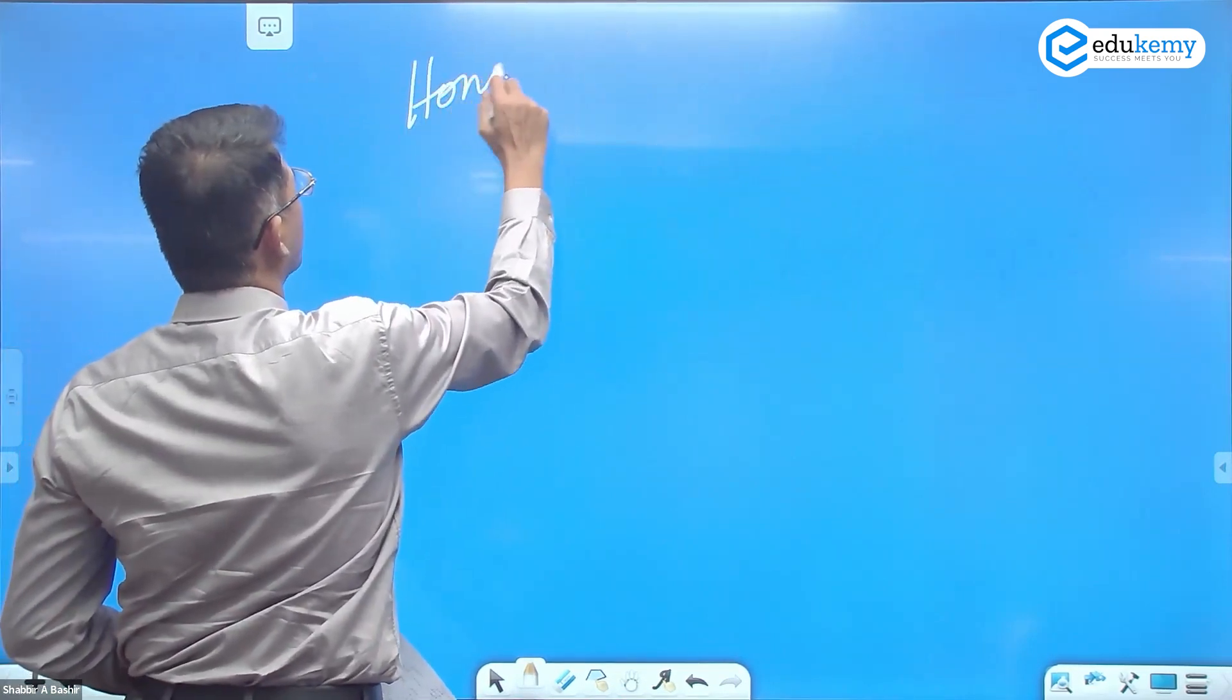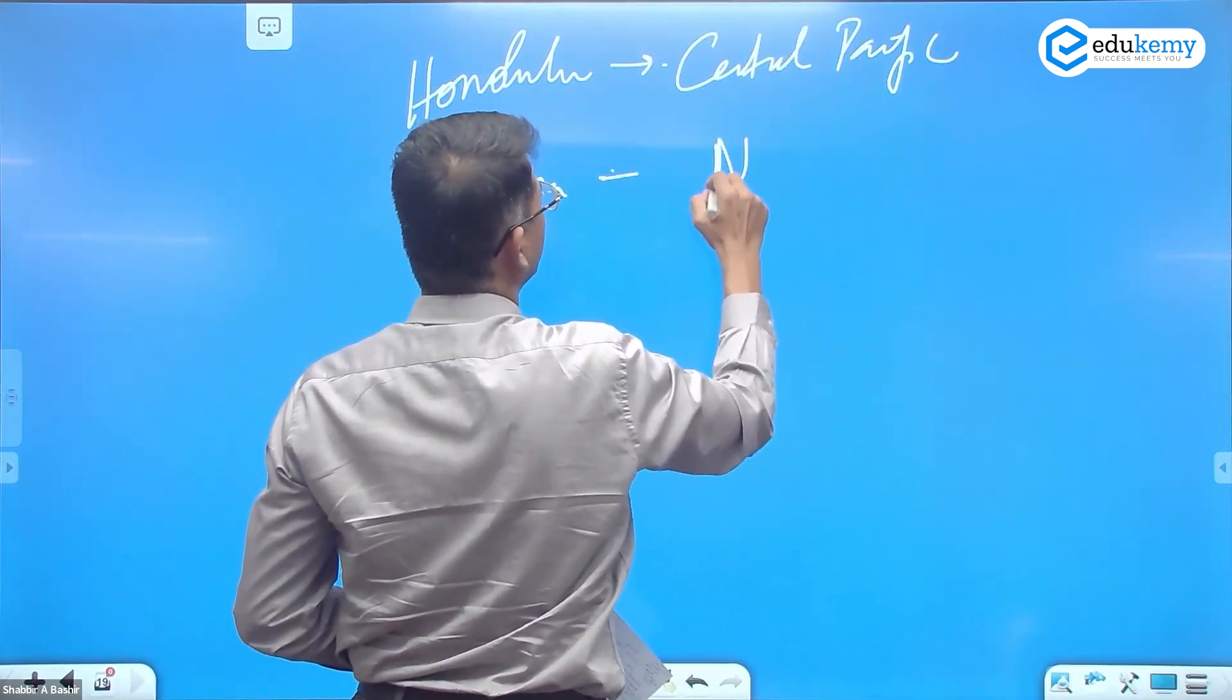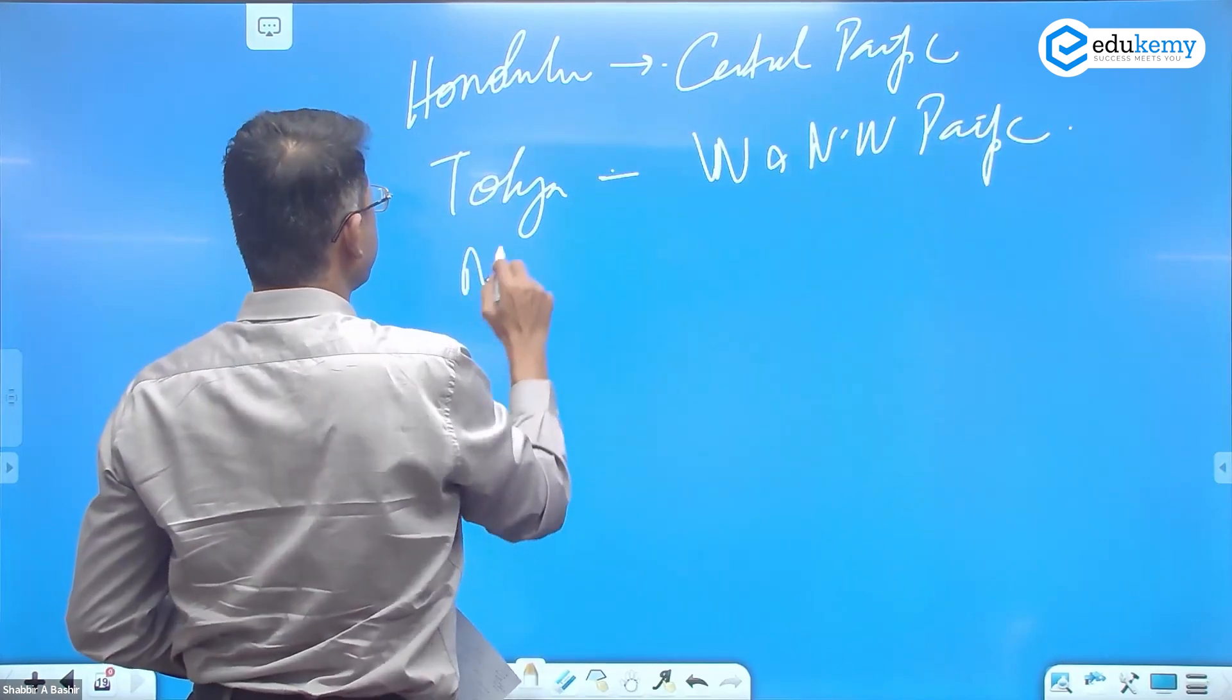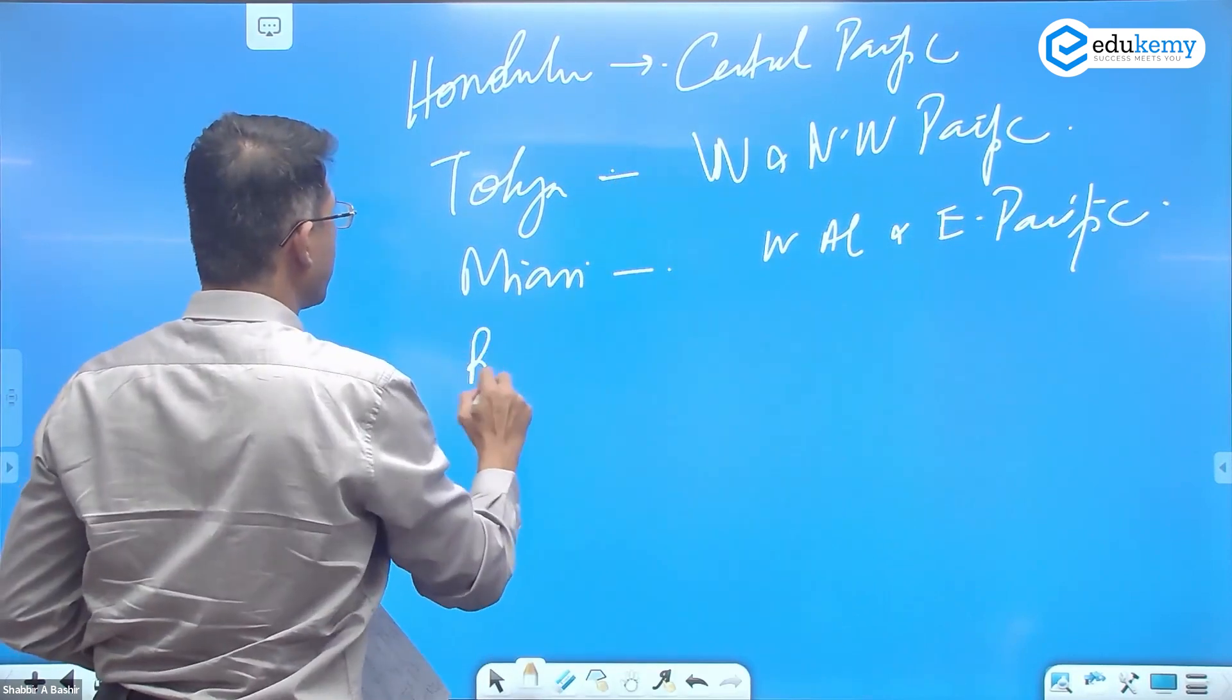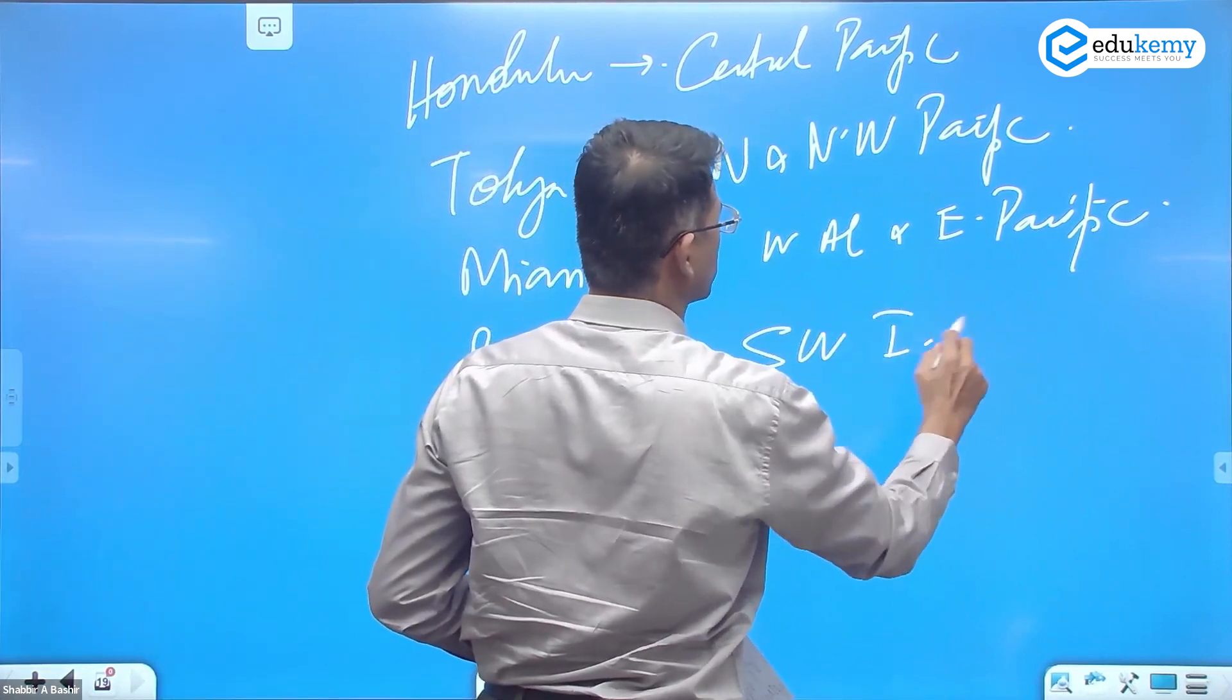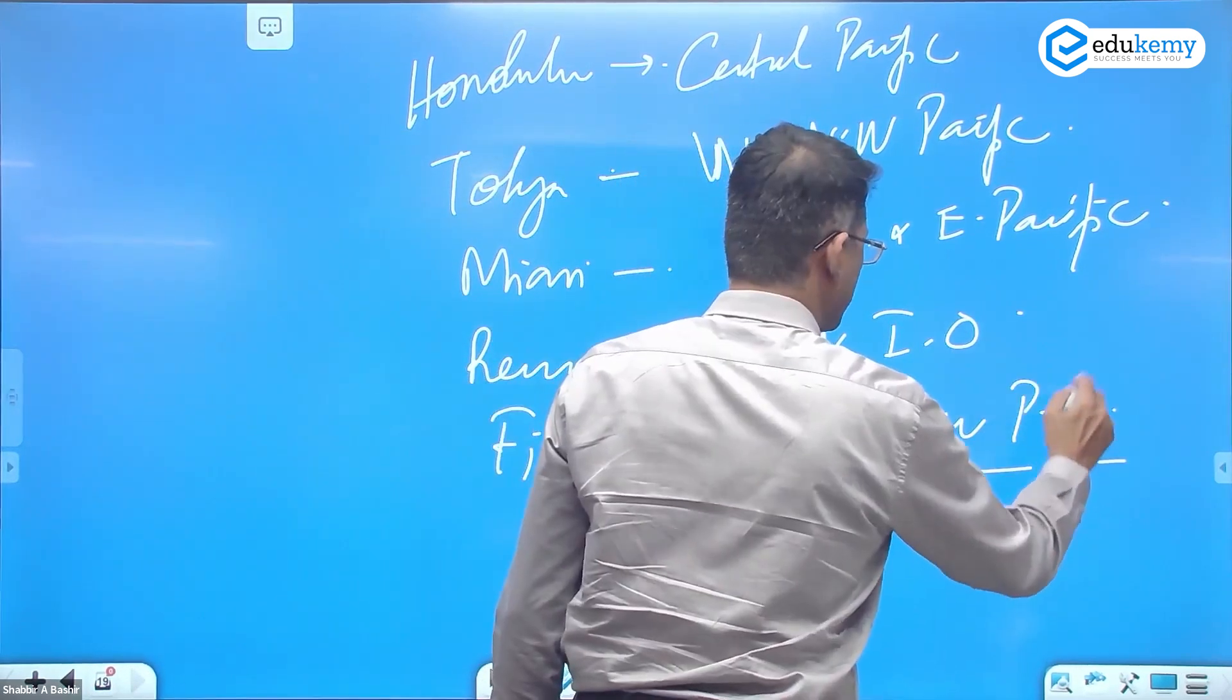Every center represents something. Honolulu represents Central Pacific. Tokyo represents West and Northwest Pacific. Miami represents Western Atlantic and Eastern Pacific. Reunion Islands represents Southwest Indian Ocean. And Fiji represents Southwest Pacific Ocean.